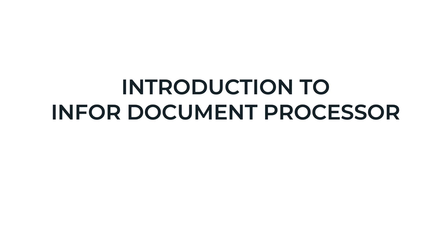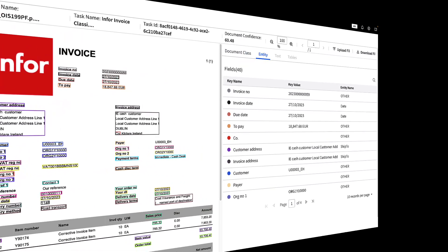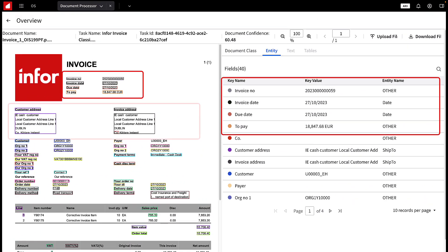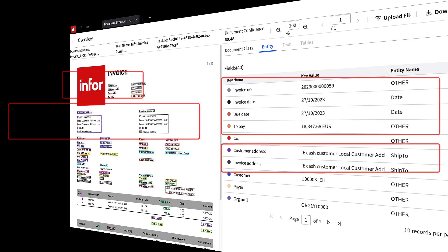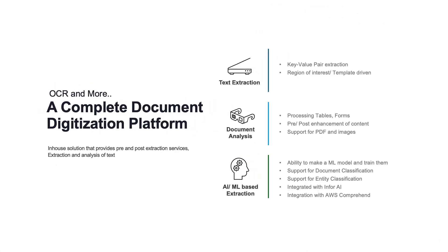Hours — perhaps even days. With Infor's Intelligent Document Processor, or IDP, you can instantly extract key data points in mere seconds, not days. IDP is a cutting-edge platform that transforms business documents using OCR and machine learning. It automates processes,